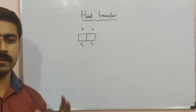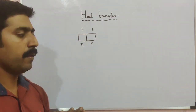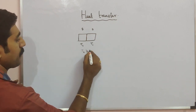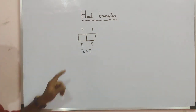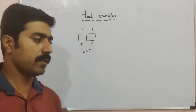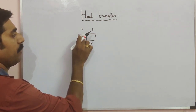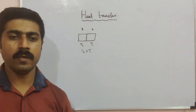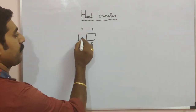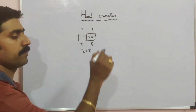For heat transfer conditions, let us take two objects. Both objects are in contact. The temperature of the second object is maximum — T2 is greater than T1. Due to this temperature difference, heat energy is transferred from the second object B to object A. Heat transfers from the object at higher temperature to the object at lower temperature.